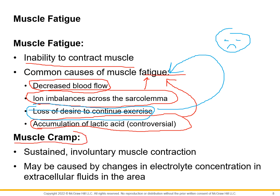Muscle cramps: by definition, a muscle cramp is a sustained involuntary muscle contraction. It can happen multiple different ways — ion imbalances, hormone issues, all kinds of different reasons. Just know that a cramp is a sustained involuntary muscle contraction. A tetanus shot is designed to help prevent infection with a bacteria that causes a muscle cramp, mainly to your masseter — we call it lockjaw. Tetanus is essentially a sustained involuntary muscle contraction, and it can be caused by multiple different things.